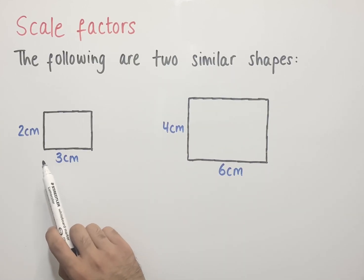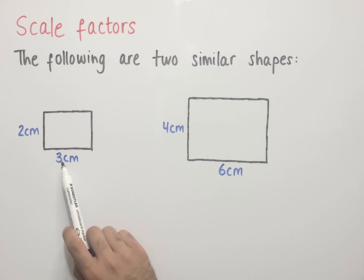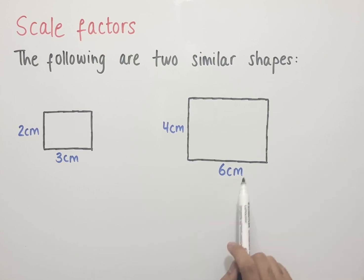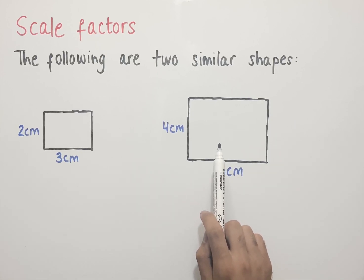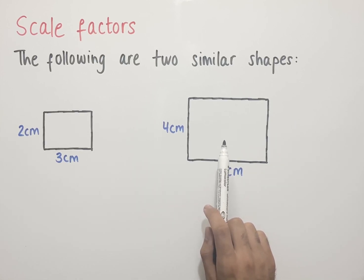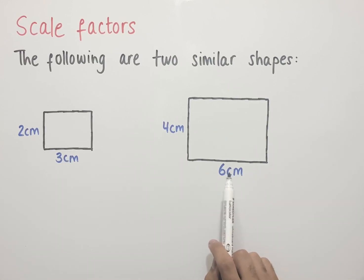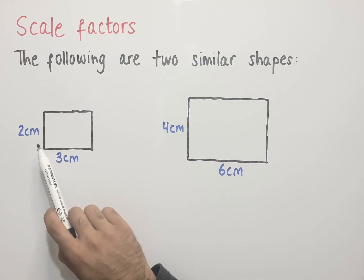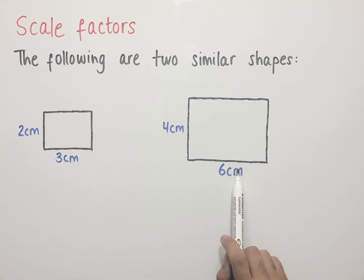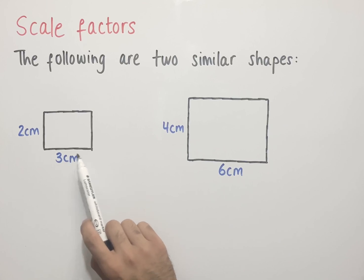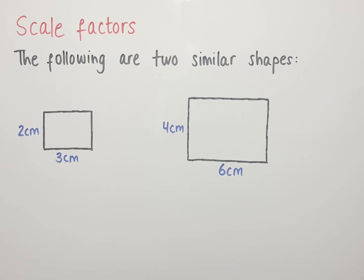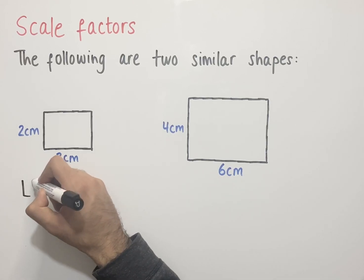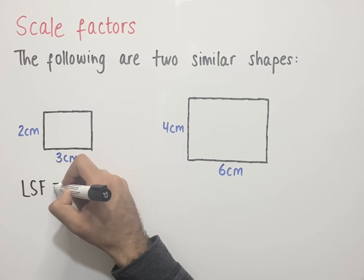Similarly, if we multiply the length of this rectangle, which is 3 centimeters, by 2, we end up with the length of the second rectangle, which is 6 centimeters. And if we want to go backwards — from the bigger rectangle to the smaller — we divide the height of this rectangle by 2 to get the height of the smaller rectangle, and divide the length by 2 to get the length of the smaller rectangle. We can say that the length scale factor, or LSF, is equal to 2.